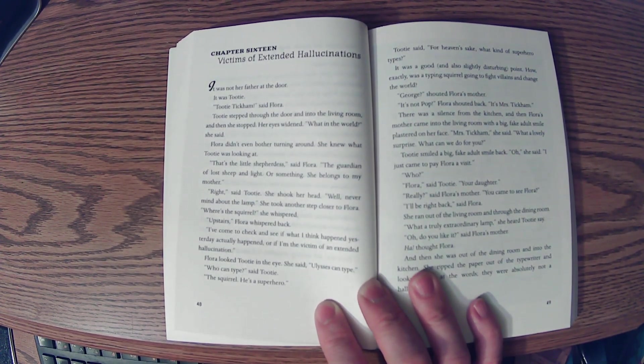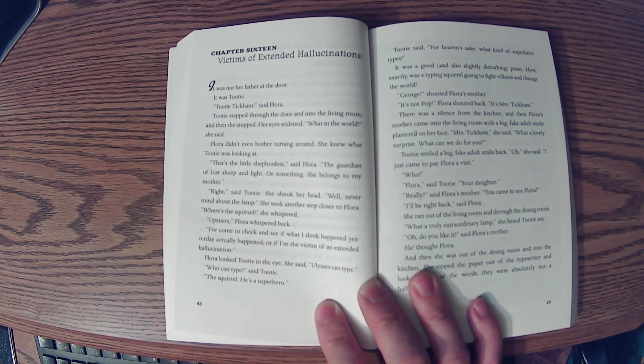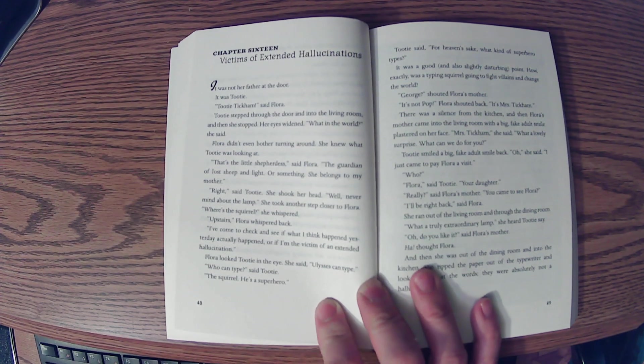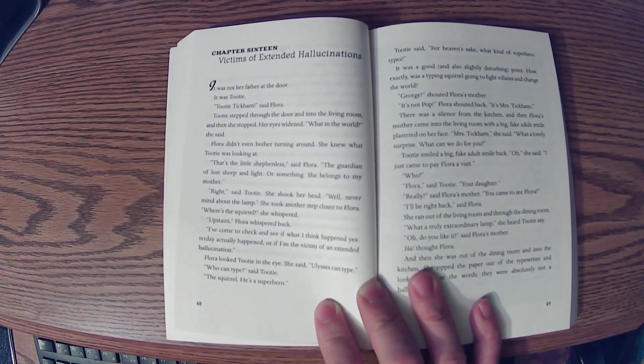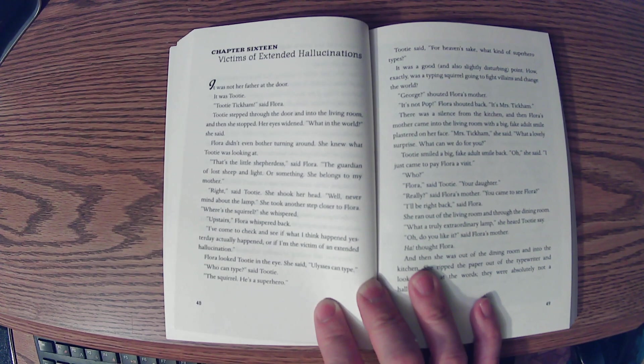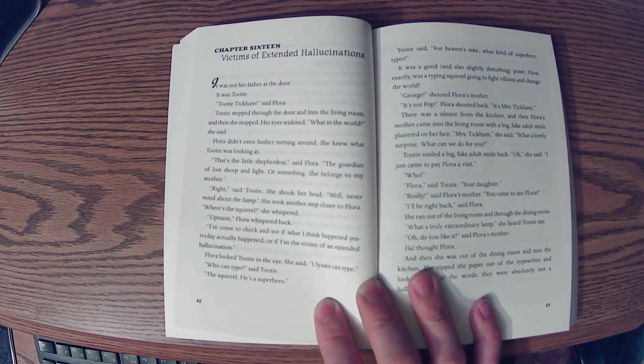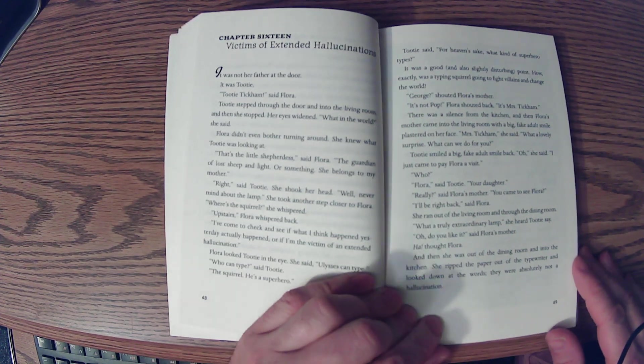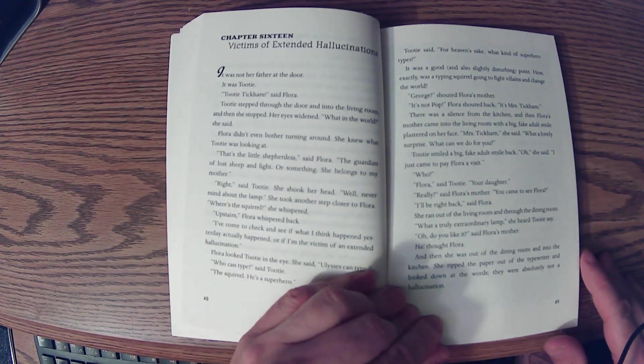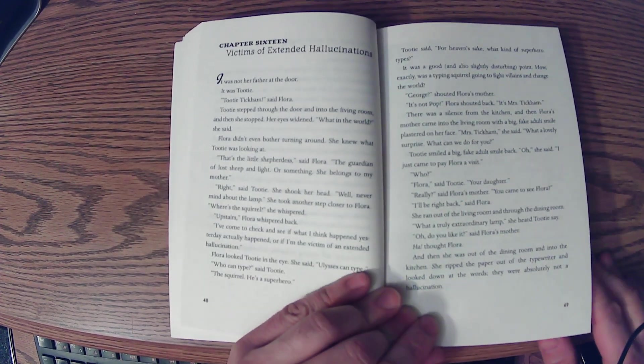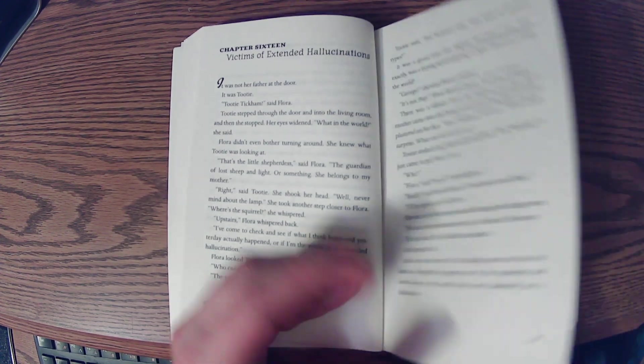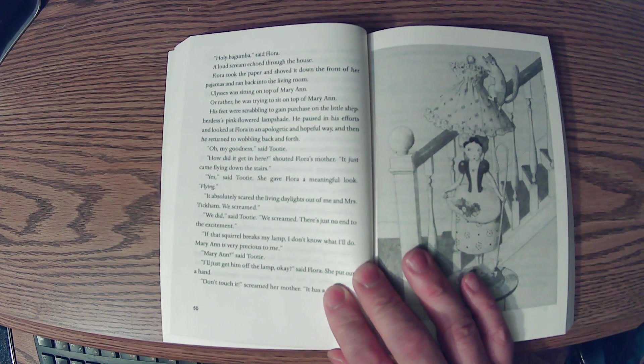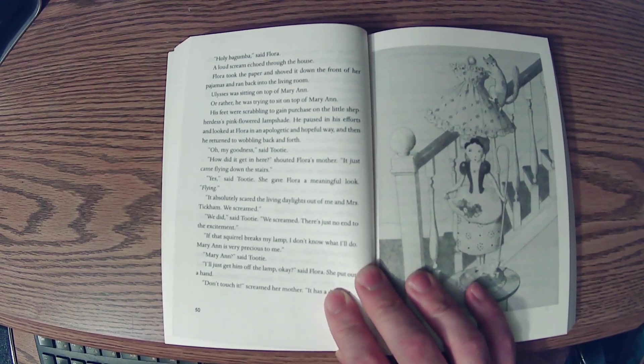I'll be right back, said Flora. And she ran out of the living room and through the dining room. What a truly extraordinary lamp, she heard Tootie say. Oh, do you like it? said Flora's mother. Ha! thought Flora. And then she was out of the dining room and into the kitchen. She ripped the paper out of the typewriter and looked down at the words. They were absolutely not a hallucination. Holy bugumba, said Flora.